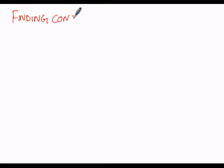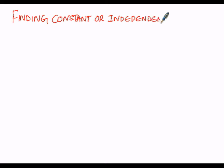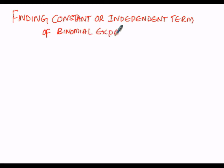We are going to find the constant term, also called the independent term — that is, the term which is free from x — in a binomial expansion at the advanced level.